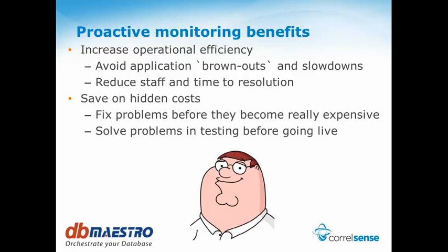So what does this bring to us and what are the benefits? It's really about increased operational efficiency — avoiding application brownouts, avoiding slowdowns, and when issues do occur, reducing the effort needed and reducing our mean times for resolution. From a testing perspective, it's more about saving on hidden costs — understanding issues early in the application lifecycle before they get expensive to fix. Let's solve problems in testing before going live, and have the tools that enable us to really understand what we need to solve. This leads very nicely into Uri's part of the presentation, where he's going to discuss DCM and DB Maestro.